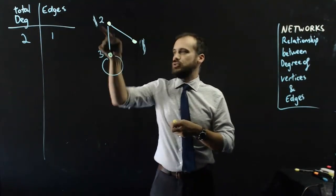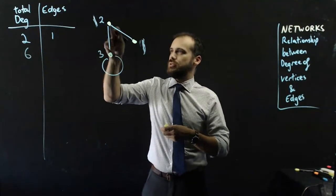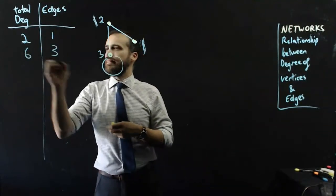Altogether I have 2 plus 3 plus 1 is 6, 6 total degrees and edges 1, 2, 3.